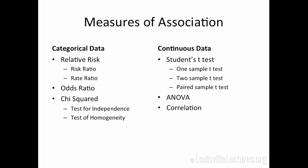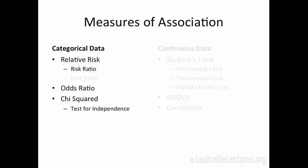Some of the measures of association we talk about — we think of them in terms of whether our data is categorical, continuous, or a combination of both. You could spend years in school learning this. These are some basic measures of association, but today I'm just going to talk about categorical data, specifically risk ratios, odds ratios, and chi-squared testing.